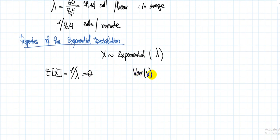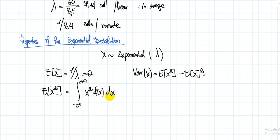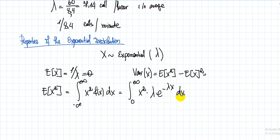Now let's evaluate the variance of X. To calculate the variance, I need E[X²] minus (E[X])². To find E[X²], I use the formula: E[g(X)] is the integral of g(x) times the density function. So this becomes the integral from 0 to infinity of x² times lambda times e to the power of minus lambda x dx.